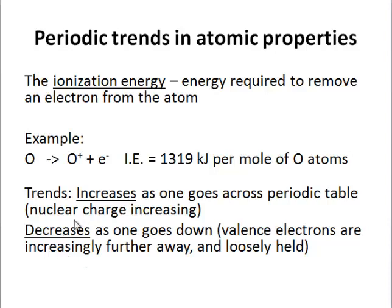This number increases as you go across. The nucleus holds the electrons more tightly as the attraction goes up. It decreases as one goes down. Valence electrons are farther away from the nucleus, farther away from that positive charge in the nucleus, and more loosely held as you go down. As you go down, the n value increases, and the valence electrons are further and further away.